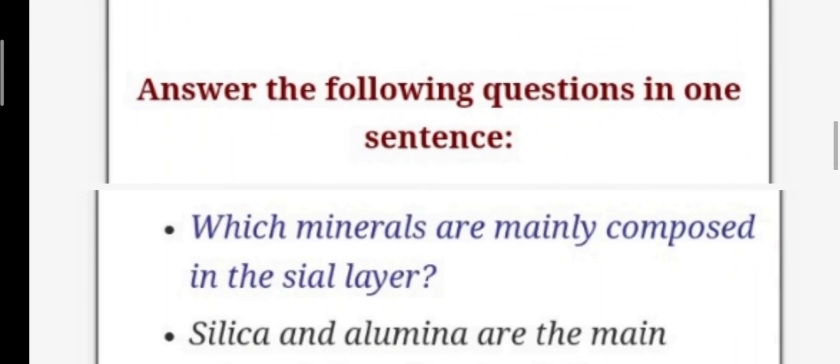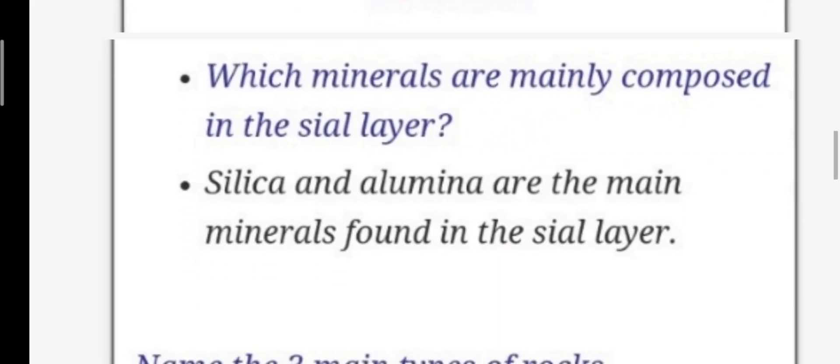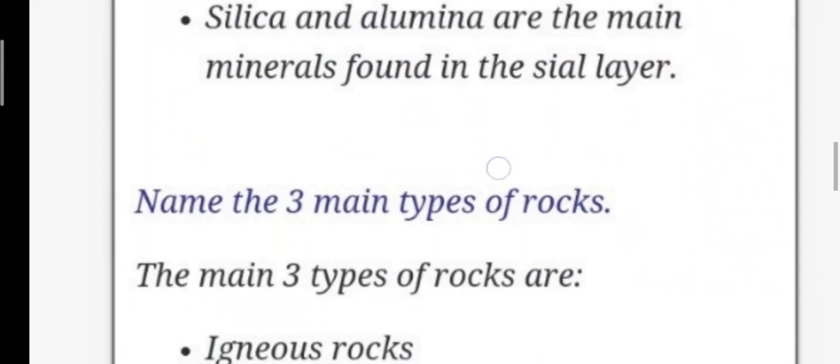Answer the following questions in one sentence. Here we have to give answers to questions in one sentence. Let's start question answer. First question is here: which minerals are mainly composed in the sial layer? Answer: silica and alumina are the main minerals found in the sial layer.